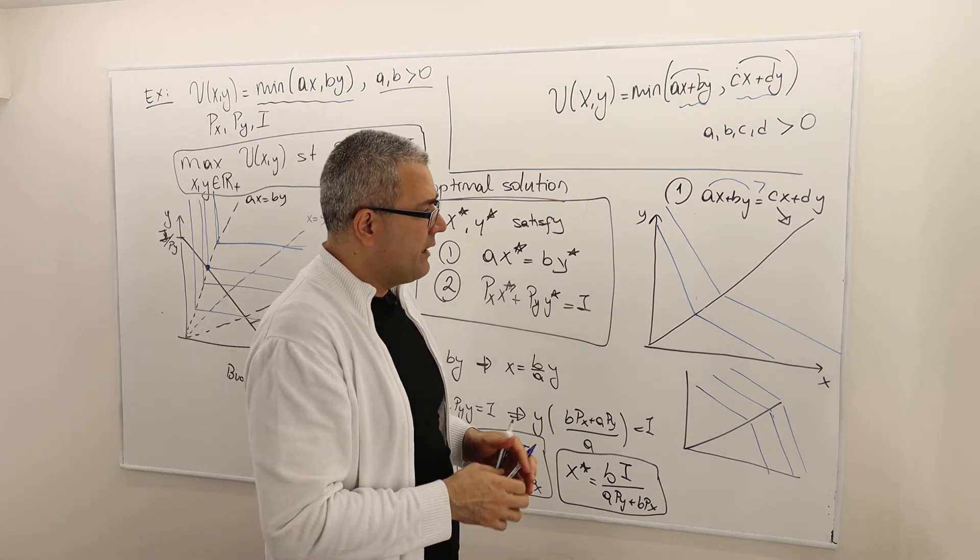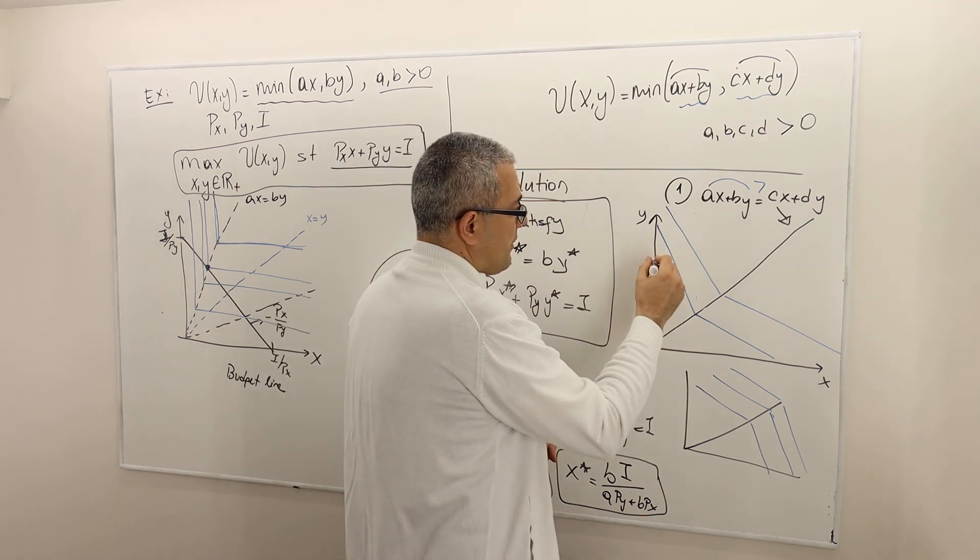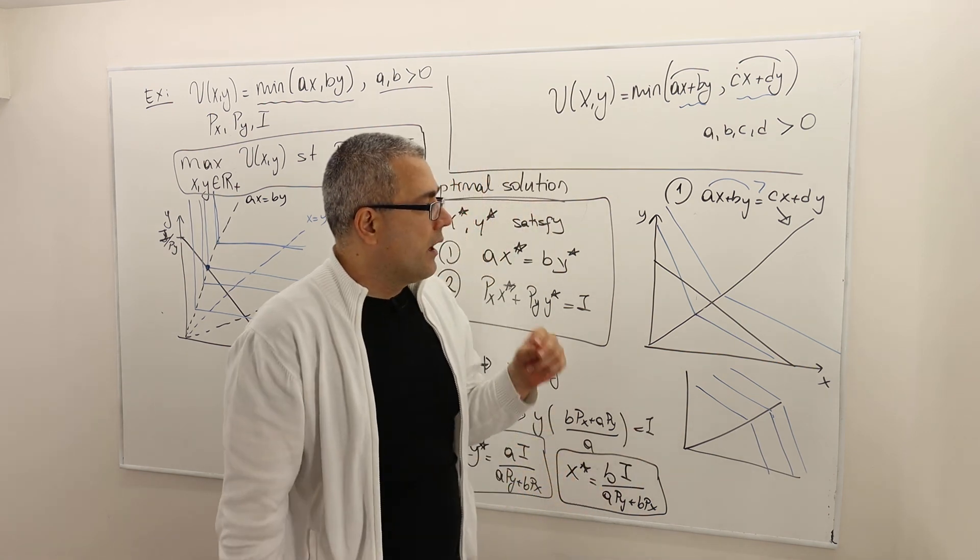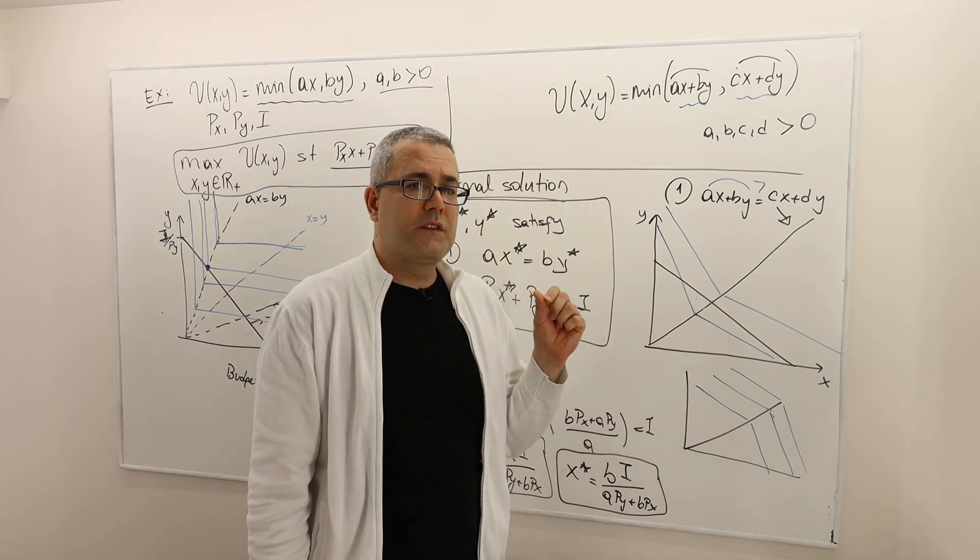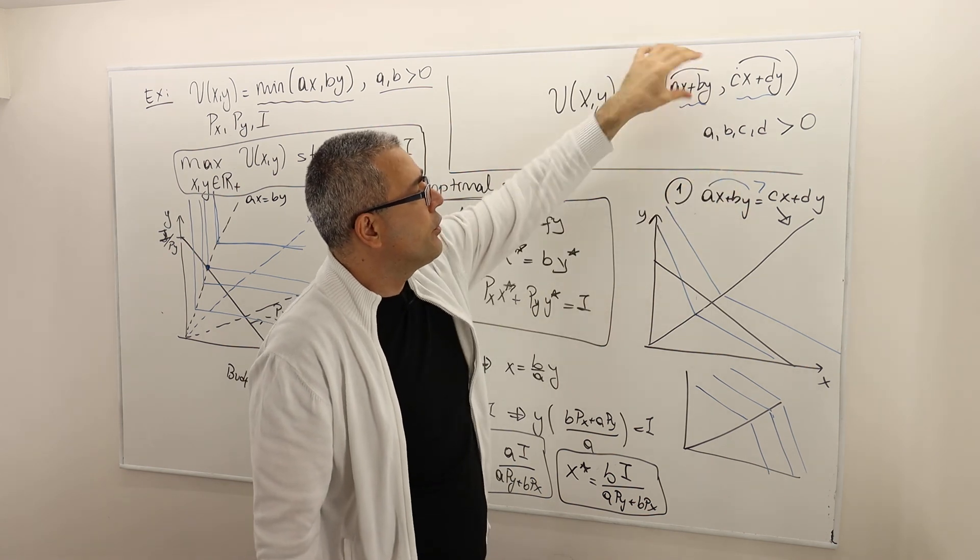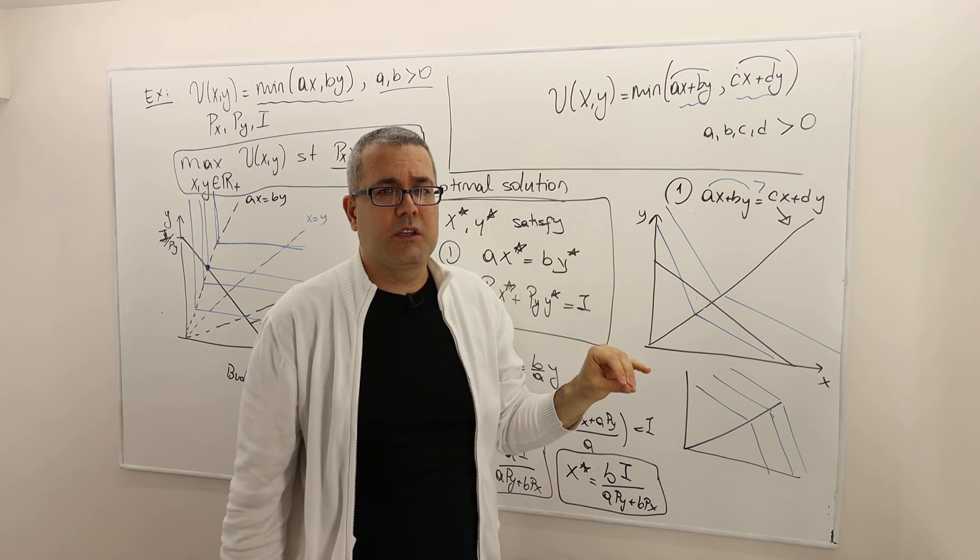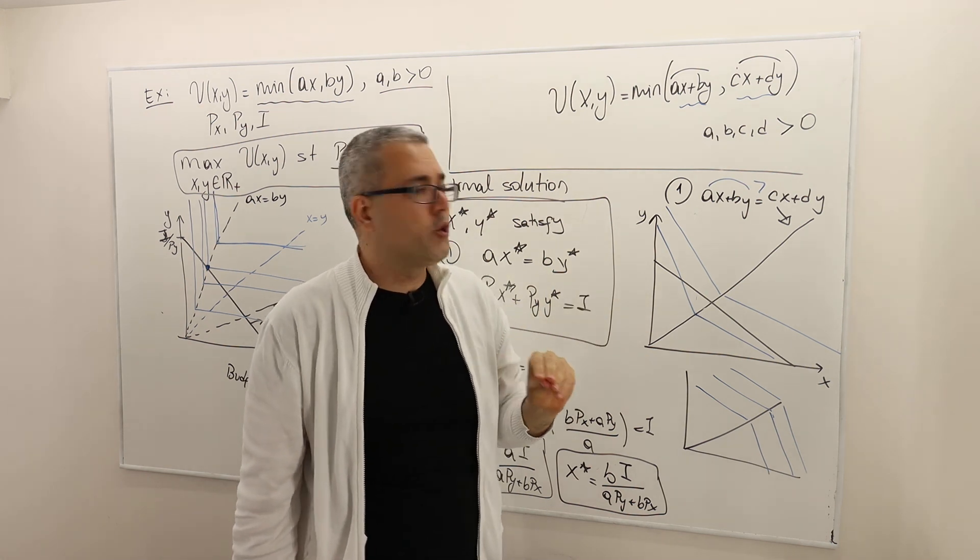So what does that mean? That means when I draw my budget line, so let's say my budget line is something like this. So here I have to compare slope of this term, the first term, the slope of the second term, and then the slope of the budget line to figure out where the optimal should be.